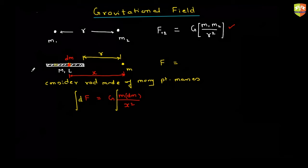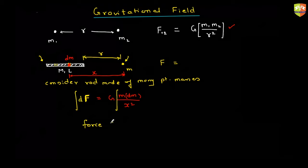At times there could be a rod, some irregular shape, or many other different kinds of scenarios. We need to define something helpful to determine the effect of the distribution of mass — for example, the effect due to the rod at a particular point. The force depends on both masses.